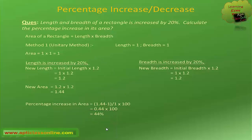We can also get this value directly from the multiplying factor. As we have seen, if 1 has increased to 1.44, it signifies that there is a 44 percent increase. So from the multiplying factor itself, we can determine there is a 44 percent increase in area. With the help of the unitary method, we can calculate the percentage increase in area.